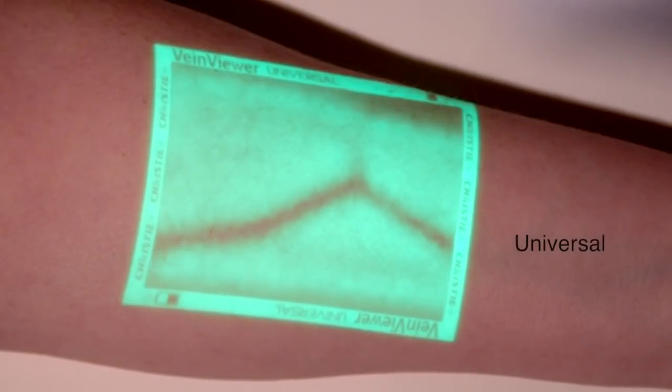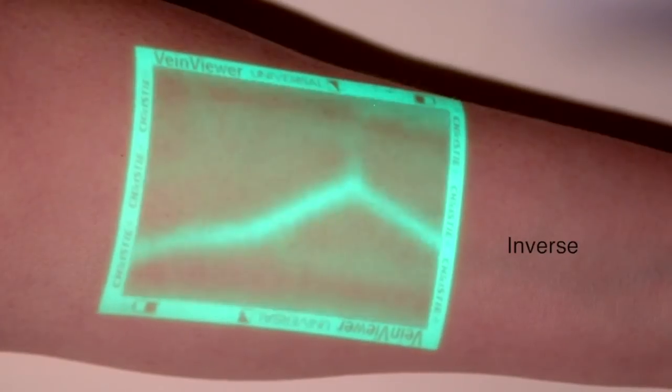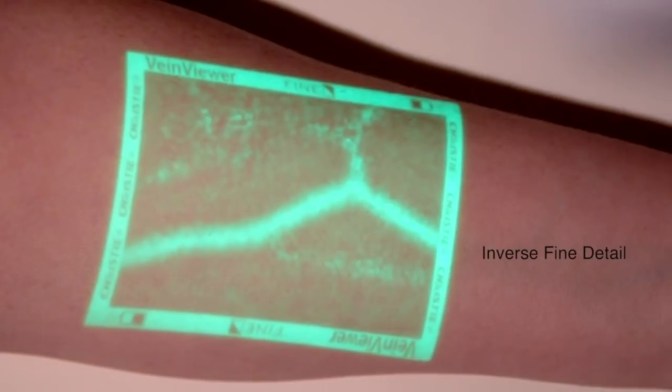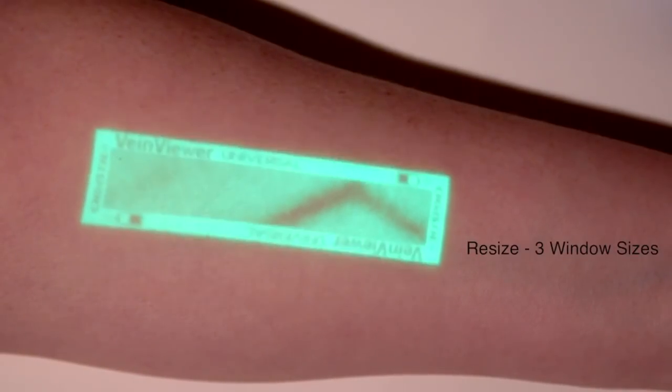Through the use of near-infrared technology, VainViewerFlex can project a real-time image of the venous pathway directly onto the surface of the skin. The available modes are suitable for a range of skin tones and applications.